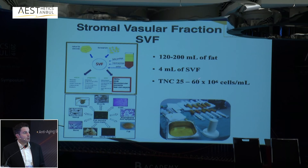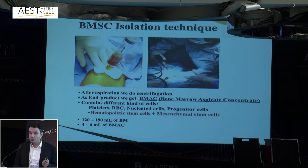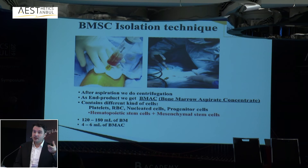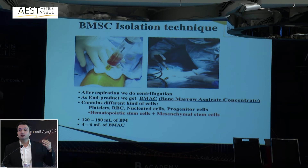From bone marrow, we obtain both hematopoietic and mesenchymal stem cells. Personally, for some indications I consider bone marrow a more potent substrate than stromal vascular fraction, because it also contains hematopoietic stem cells with paracrine effects, and specific phenotypes that are phylogenically younger with higher proliferation and regeneration potential in the lab. We use bone marrow aspirate concentrate for hair growth.